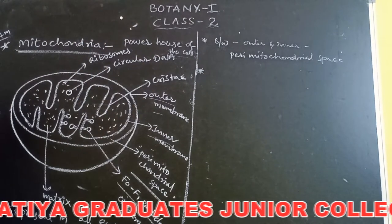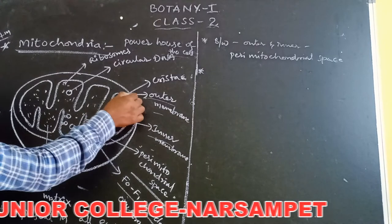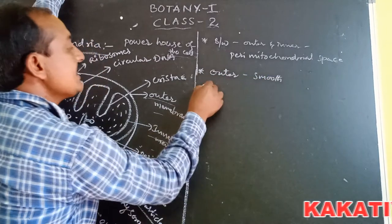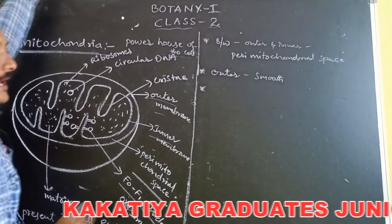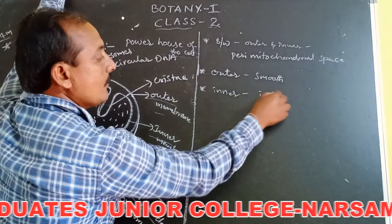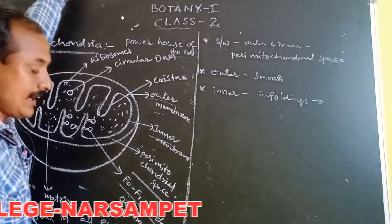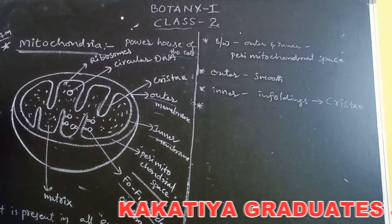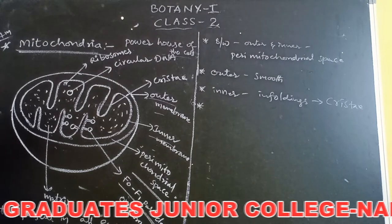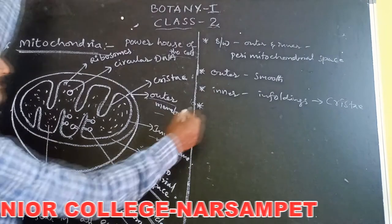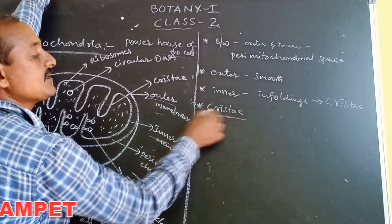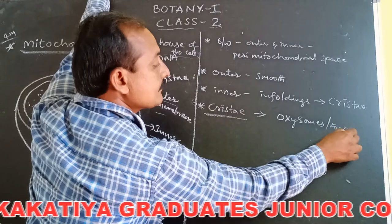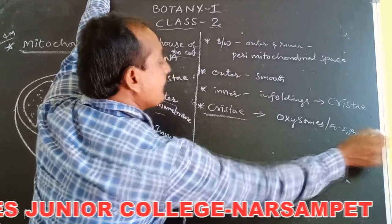The outer membrane is smooth with no infoldings, but the inner membrane is infolded to form structures called cristae. The infoldings are called cristae. Each crista consists of F0, F1 particles, also called oxysomes. F0, F1 particles are present on the cristae.